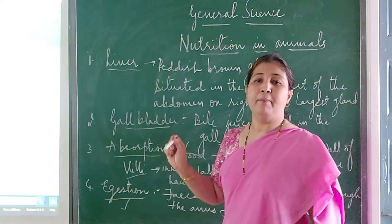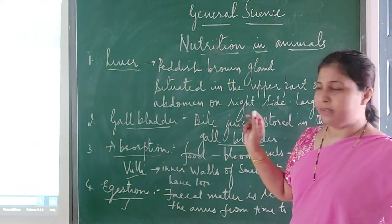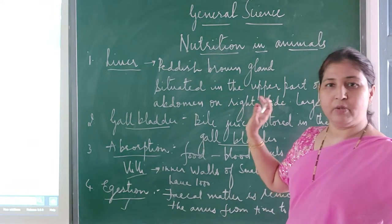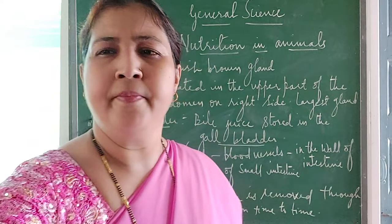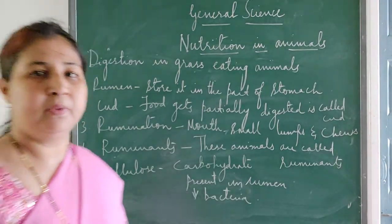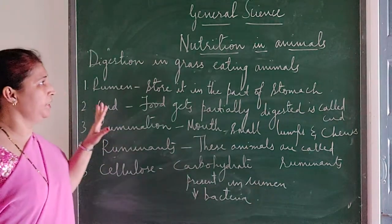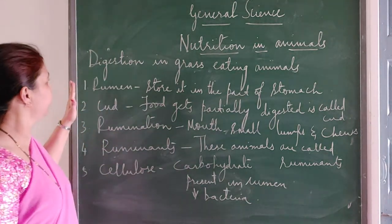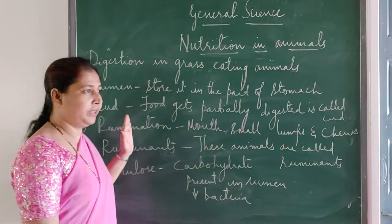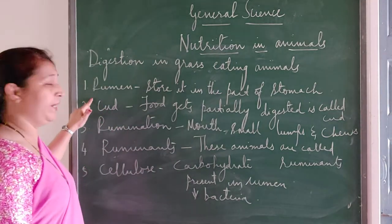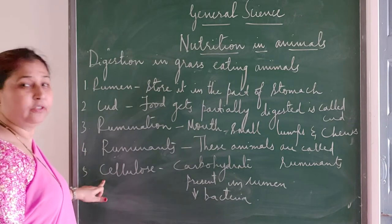Now let us study today about the digestion in grass-eating animals. We have studied in human beings; now let us study in the animals. I have already sent you the definitions — what is rumen, what is curd, what is rumination, and what is cellulose.